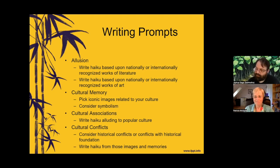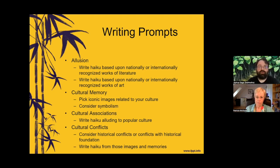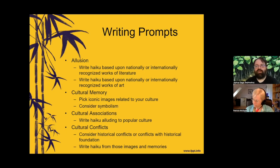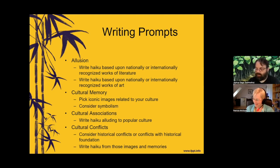Now come the writing prompts. The first prompt is a focused ekphrastic prompt: write a haiku or senryu that alludes in some way to a national or internationally recognized work of art or literature. In the UK, for example, we have the Booker; in the States, there's the Pulitzer. Look at one of those novels and write a haiku tapping into a character or famous imagery. Similarly, write a poem alluding to a famous work of art — subvert the Mona Lisa, backlight Van Gogh's Starry Night, doodle glasses on the Sistine Chapel, or re-rig the bells of Notre Dame to play AC/DC at midnight — but do it in haiku.